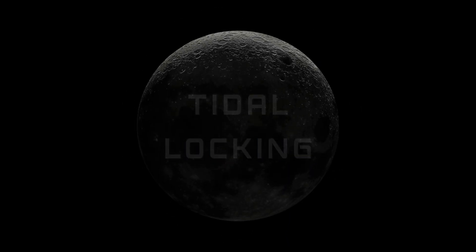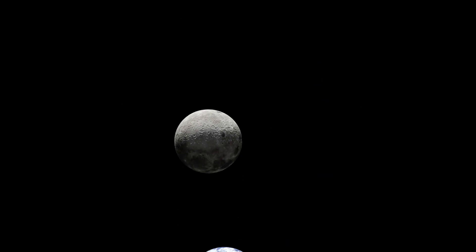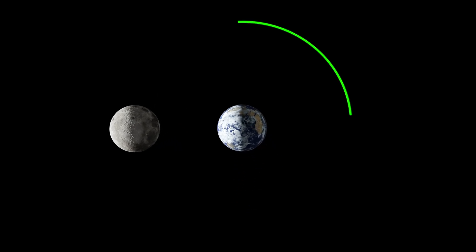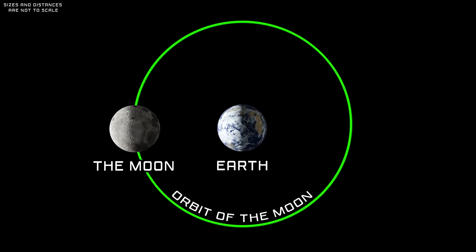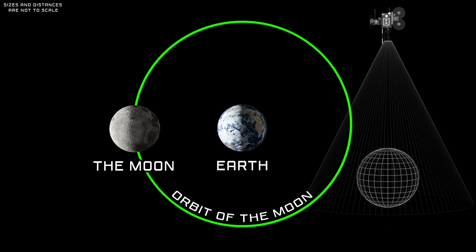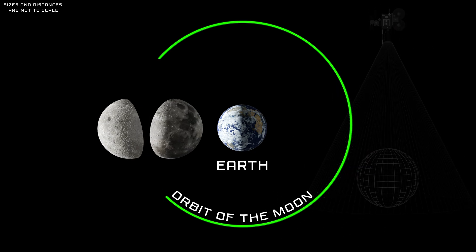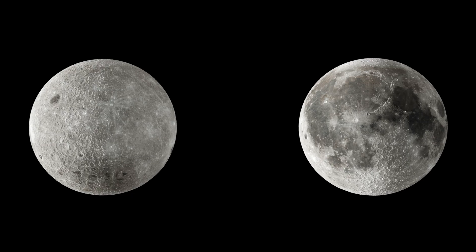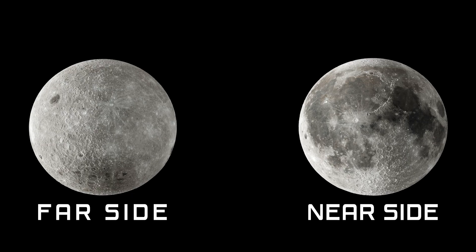This phenomenon is known as tidal locking. To understand it, we need to look at the Moon's orbit around Earth from a polar view and divide the Moon into two halves. One is called the near side, and the other is called the far side. The near side is colored red.